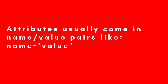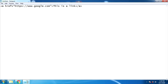Attributes usually come in name-value pairs like name equals value in double quotes. So there will be an attribute name and it will have a particular value which will give additional information about the element. If you have a look at elements we have already visited, like the anchor tag or 'a' tag.